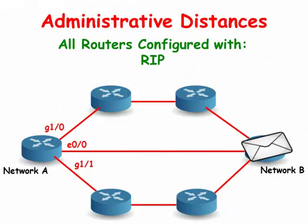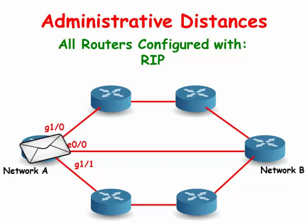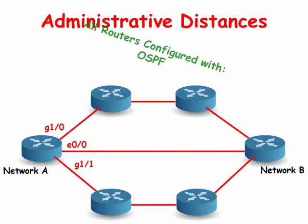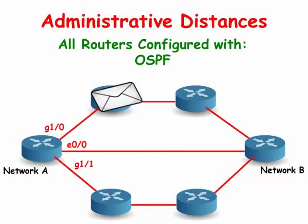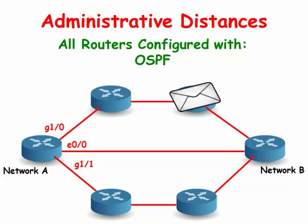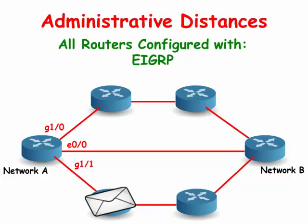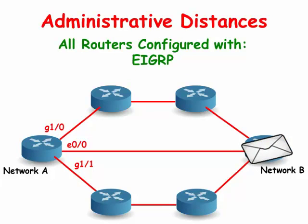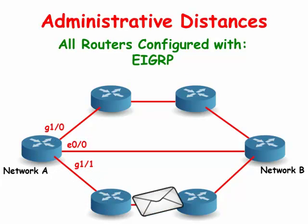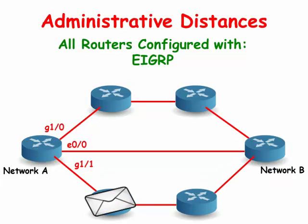Most routing protocols have metric structures and algorithms that are incompatible with other protocols. It is critical that a network using multiple routing protocols be able to seamlessly exchange route information and be able to select the best path across multiple protocols. If not, a router might be presented with a problem where two routing protocols such as EIGRP and OSPF have two best paths to a certain network and the router does not know which route it should use.